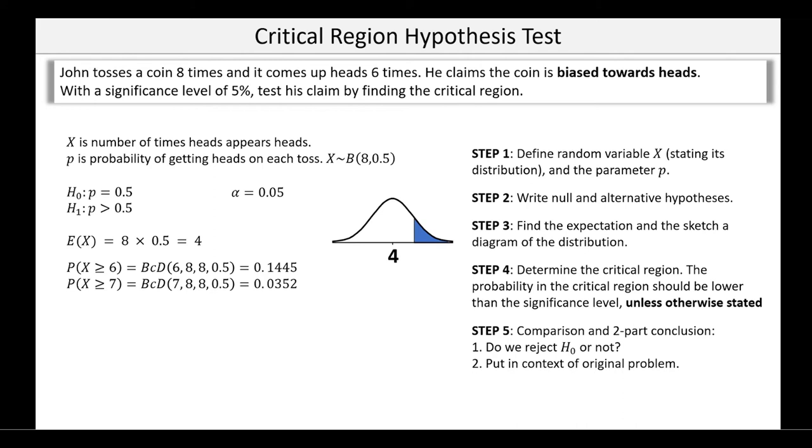And actually, all the values bigger than 7 would also make me reject H0. So we found our critical value, which leads to our critical region. X is greater than or equal to 7.